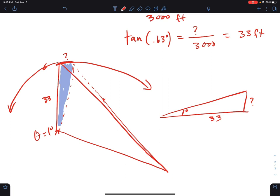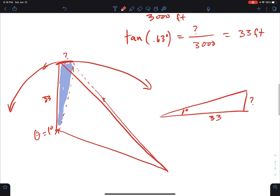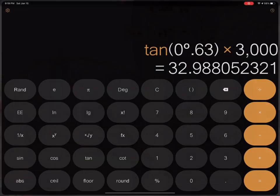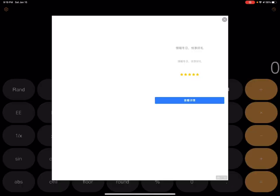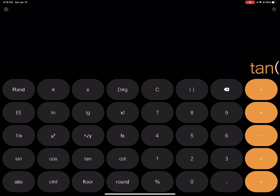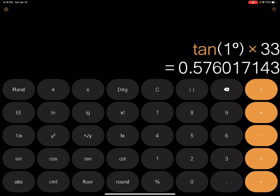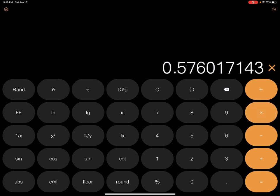So we're going to use tangent again, because we're not using the hypotenuse at all here. So tangent of one degree equals x, or question mark, whatever, over 33. Let's see what this is. Tangent of one degree times 33. 0.576. That's feet. So that's over half a foot. I was thinking it was about half a foot. So let's see what we do.